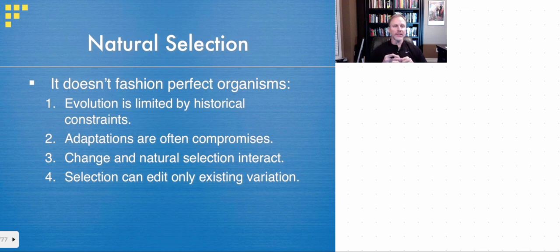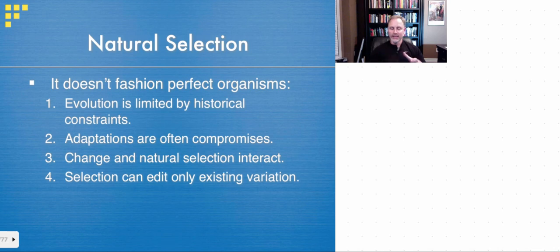Now, as far as natural selection is concerned, it doesn't really fashion the perfect organism. It's limited in many ways by historical constraints. It's got adaptations that are compromises between this and that, depending on the history of the organism. There's chance, which we've learned, bottleneck effect and so forth, that can cause problems. And then selection only works on that existing variation.